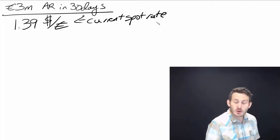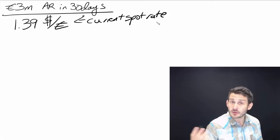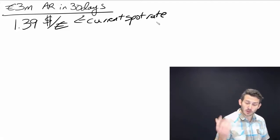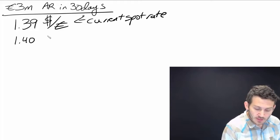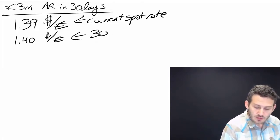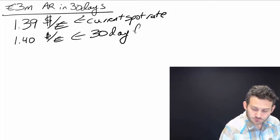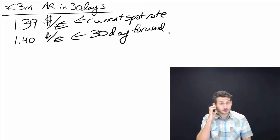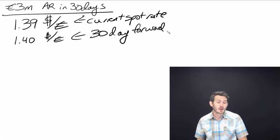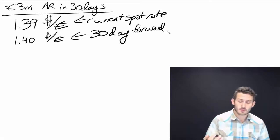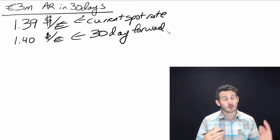But I also want to see what the forward rate is going to be. So I call my investment banker and they tell me that the 30-day forward rate is 1.40. So what am I going to do here? I don't want to take a risk - I want to lock in my payment. Even though this rate is different, I'm going to lock this in with the forward rate.